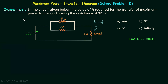Let us read the problem. In the circuit given below, the value of R required for the transfer of maximum power to the load having the resistance of 3 ohms is — there are 4 options and we are required to choose the correct one. Let us solve this problem.